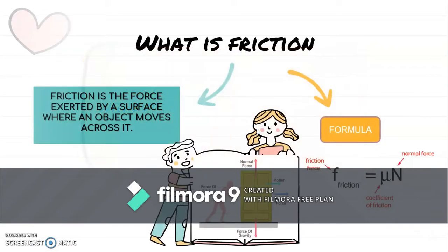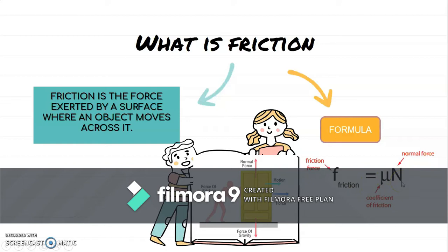What is friction? Friction is the force exerted by a surface when an object moves across it. The formula for friction is F equal to the coefficient of friction multiplied by the normal force.